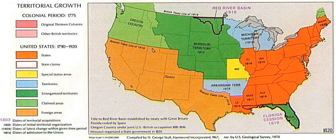The Missouri Compromise was controversial at the time, as many worried that the country had become lawfully divided along sectional lines. The bill was effectively repealed in the Kansas–Nebraska Act of 1854, and declared unconstitutional in Dred Scott v. Sanford. This increased tensions over slavery and eventually led to the Civil War.